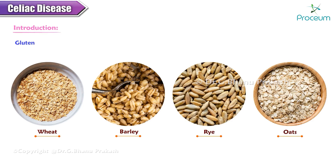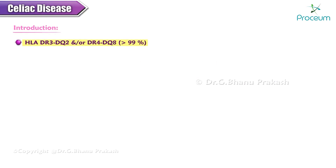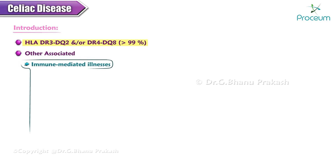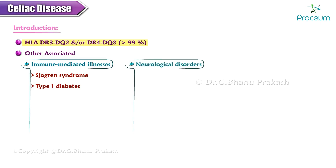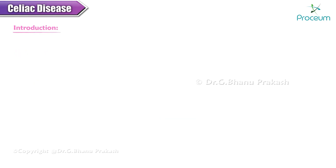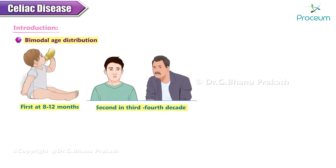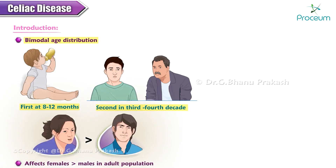Among these products, oats are comparatively tolerable by most patients. More than 99% of individuals with celiac disease have HLA-DR3-DQ2 and/or DR4-DQ8, compared with 30 to 40 percent of the general population. By these associations, celiac disease has been linked with other immune-mediated illnesses like Sjögren's syndrome and type 1 diabetes, as well as neurological disorders like ataxia, depression, epilepsy, Down syndrome, and Turner syndrome. Celiac disease shows a bimodal age distribution: first at 8 to 12 months, and second in the third to fourth decade.